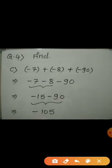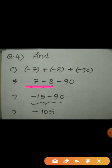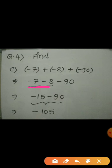Now look at the third example: minus 7, plus minus 8, plus minus 90. Open the brackets first: we get minus 7, minus 8, and plus minus becomes minus, so minus 90. All three integers are negative. Add the first two: minus 7 plus minus 8 equals minus 15. Then add minus 15 and minus 90 — both are negative, so their addition is minus 105. The answer is negative because both integers are negative. So like this, you can solve the remaining examples given in your textbook.